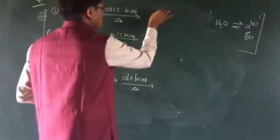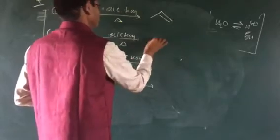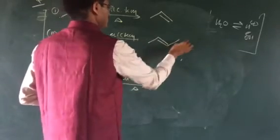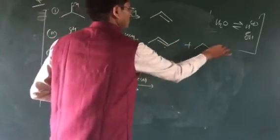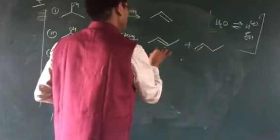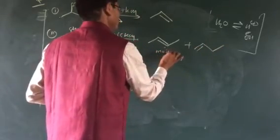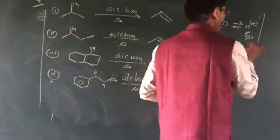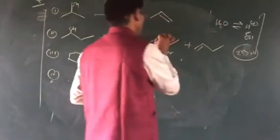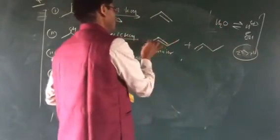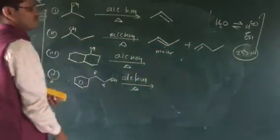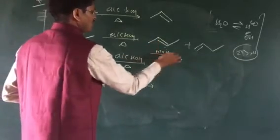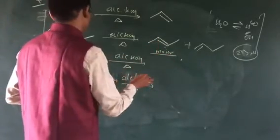The major product and minor product are determined as follows: we know that the secondary carbon is measured over primary carbon. Since this is a secondary carbon and this is a primary carbon, olefination or elimination occurs preferentially at the secondary carbon. This is because it is a secondary carbon type.